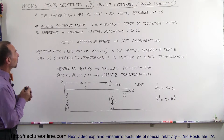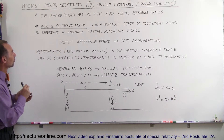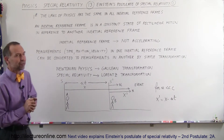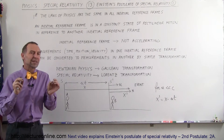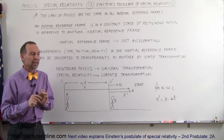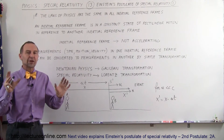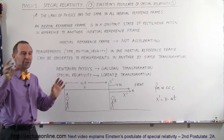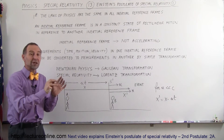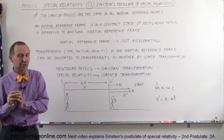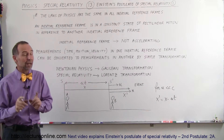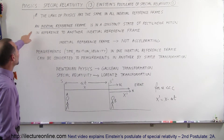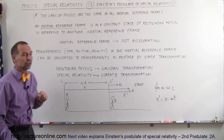The first postulate we're going to talk about is: the laws of physics are the same in all inertial reference frames. Let's say there are two different reference frames and we want to be able to compare the observations from one reference frame to the observations from the other. How do we do that? Well, it depends on whether or not the frames are inertial reference frames.